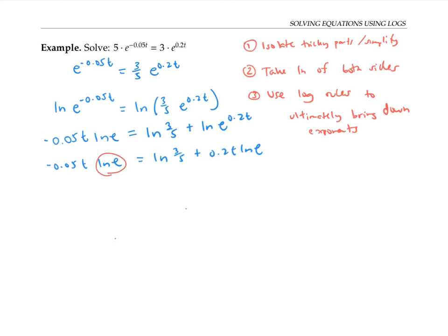Now ln(e) is a really nice expression. ln(e) means log base e of e. So that's asking what power do I raise e to in order to get e? And the answer is one. So anytime I have ln(e), I can just replace that with one. That's why using natural log is a little bit handier here than using log base 10—you can make that simplification.